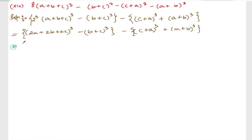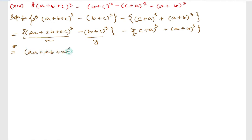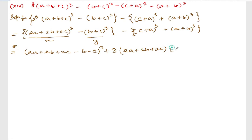I hope you don't have any doubts here. Now take all this as x and (b plus c) as y. So it becomes x cube minus y cube. What is the formula for x cube minus y cube? It is (x minus y) whole cube plus 3xy, and in this case it is plus 3xy. Here x is (2a plus 2b plus 2c) and y is (b plus c).